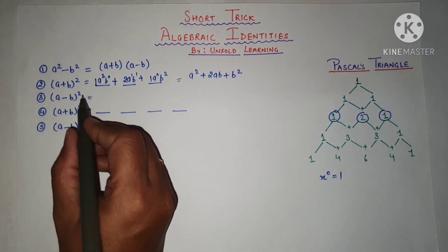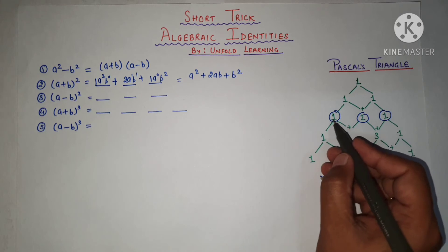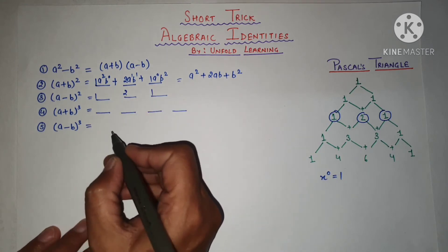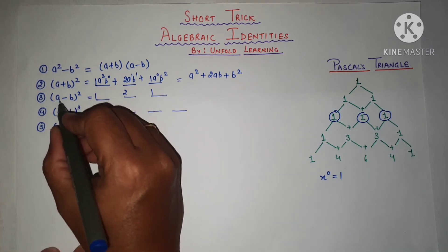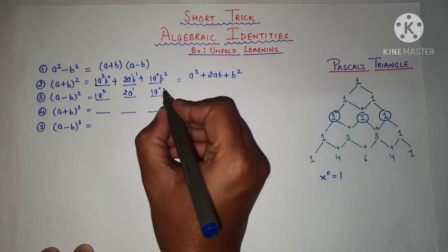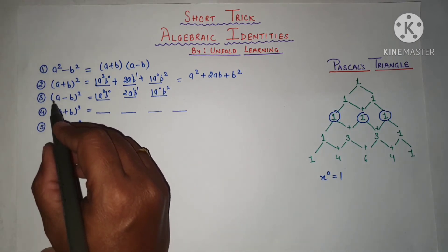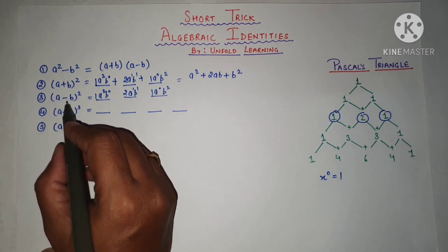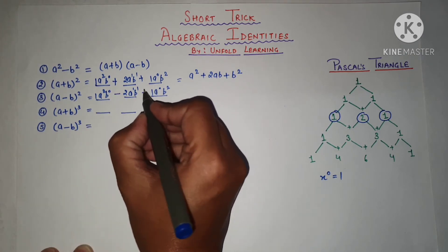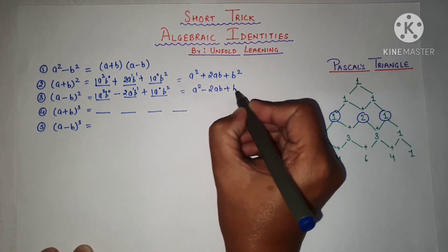Similarly, for (a − b) whole square, we have 3 terms with coefficients 1, 2, and 1. Writing the powers of A: A squared, A to the power 1, A to the power 0. For B: B squared, B to the power 1, B to the power 0. Now for the sign: the first variable is positive, the second is negative, so we alternate the signs — plus, minus, plus. So the formula becomes A squared minus 2AB plus B squared.